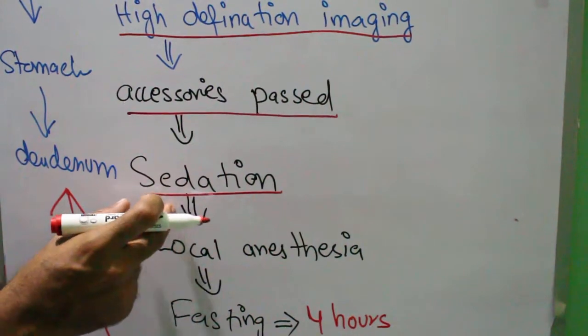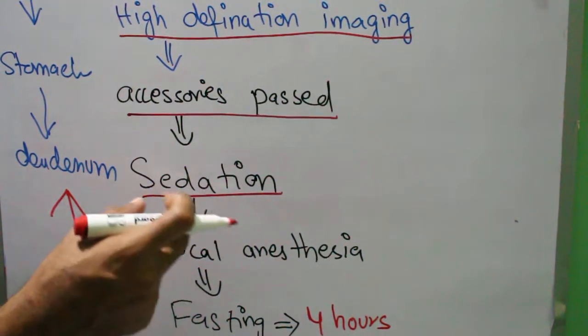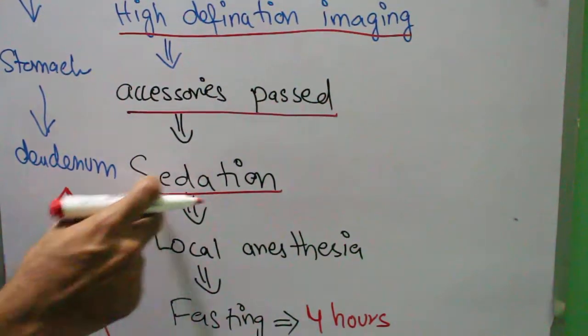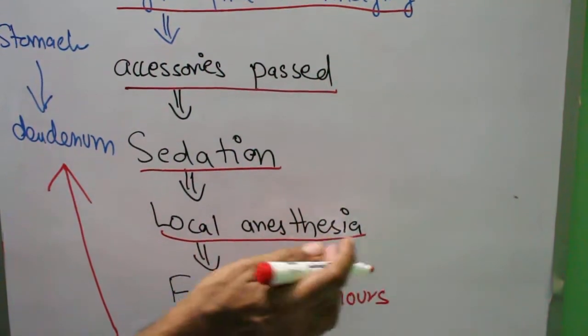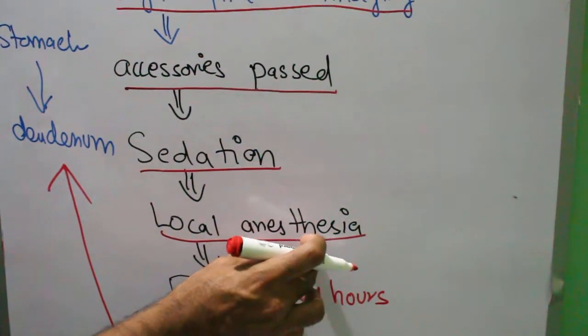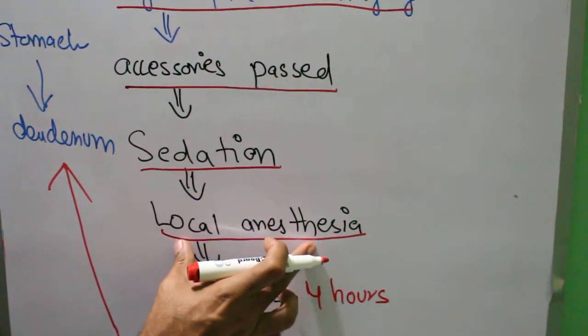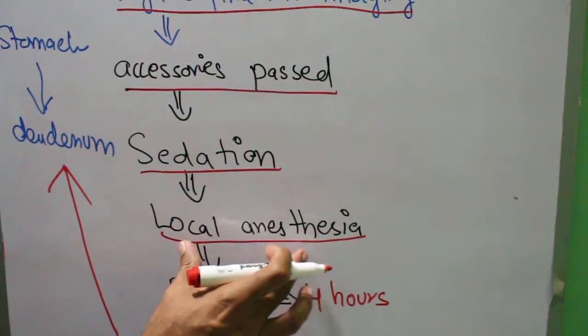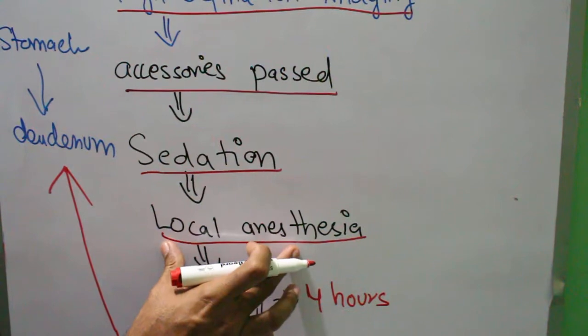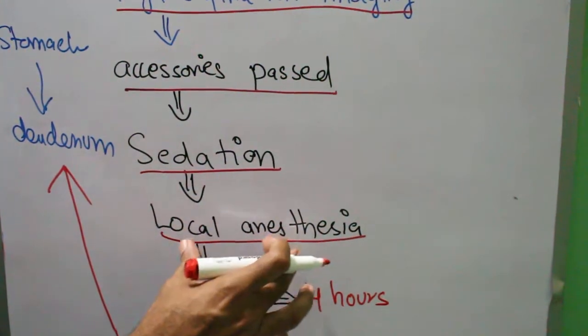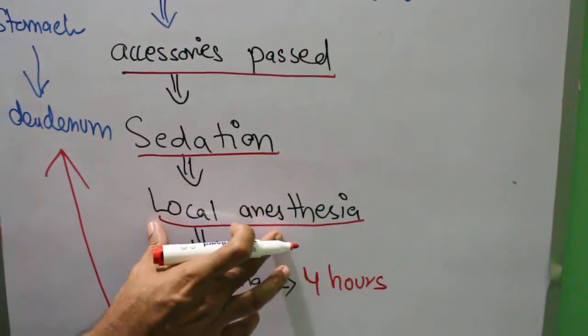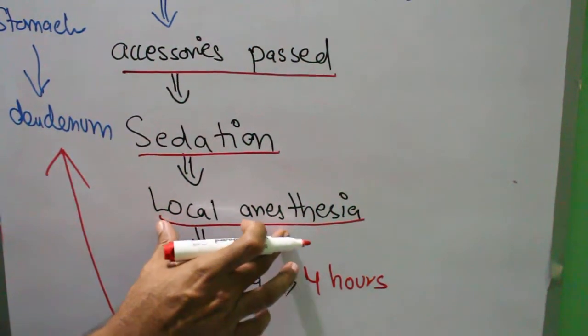Sedation is very important. There are many types. There is local anesthesia. Anesthesia means to make the patient unconscious. Local anesthesia means particular parts are anesthetized and made reflex-less. The patient is conscious, eyes are open, but the patient doesn't feel what is going on in the body.